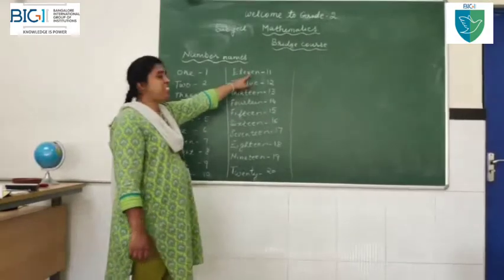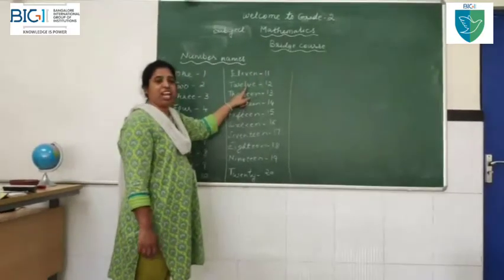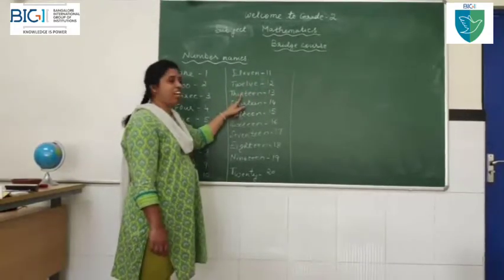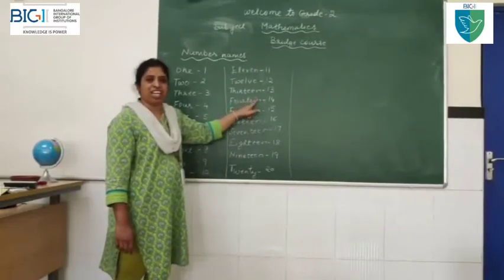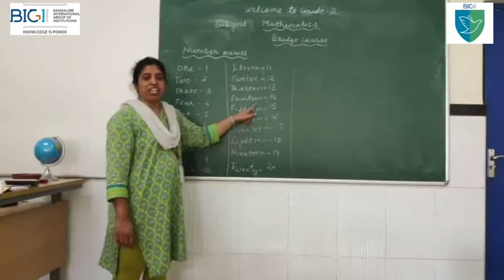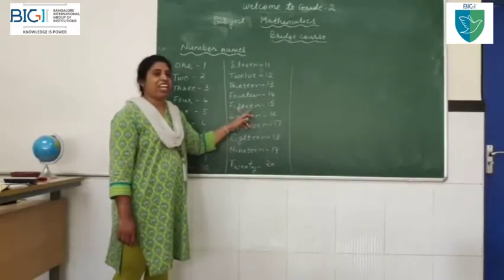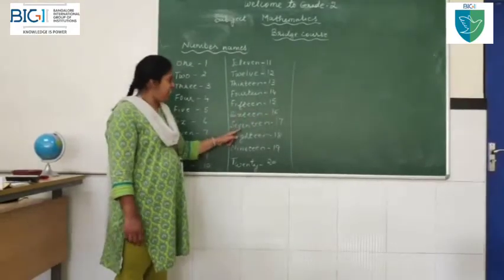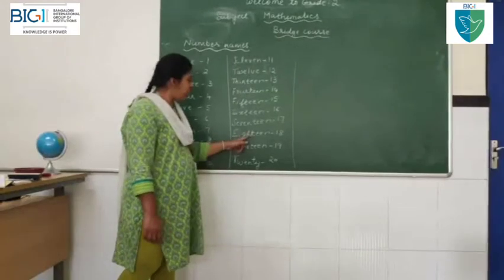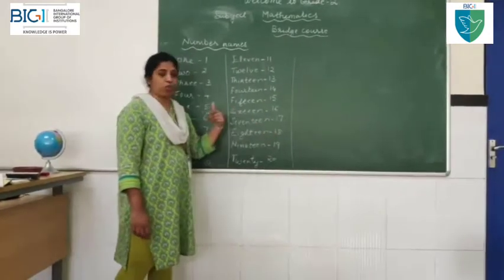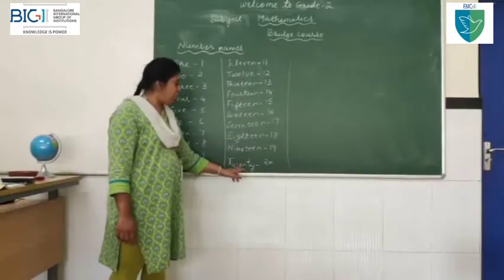Now, the next counting number is 11. E-L-E-V-E-N 11, T-W-E-L-V-E 12, T-H-I-R-T-E-E-N 13, F-O-U-R-T-E-E-N 14, F-I-F-T-E-E-N 15, S-I-X-T-E-E-N 16, S-E-V-E-N-T-E-E-N 17. You know the spelling of 8, E-I-G-H-T-E-E-N 18. You know the spelling of 9, N-I-N-E-T-E-E-N 19. T-W-E-N-T-Y 20.